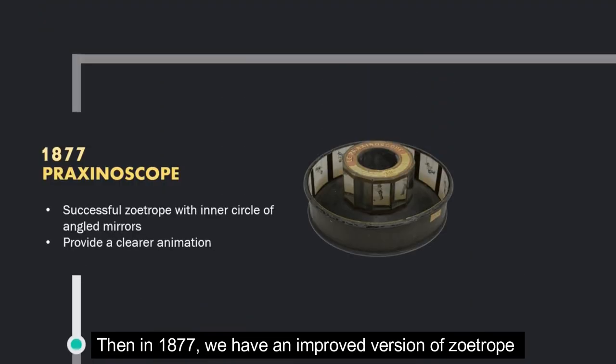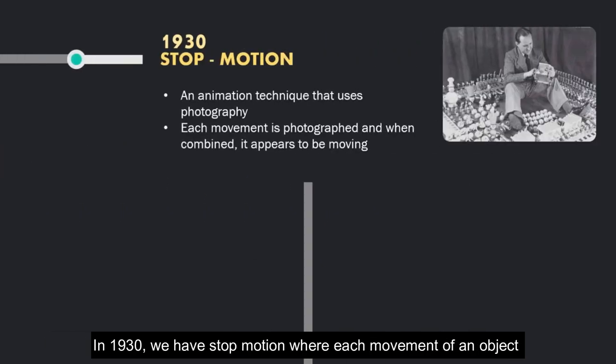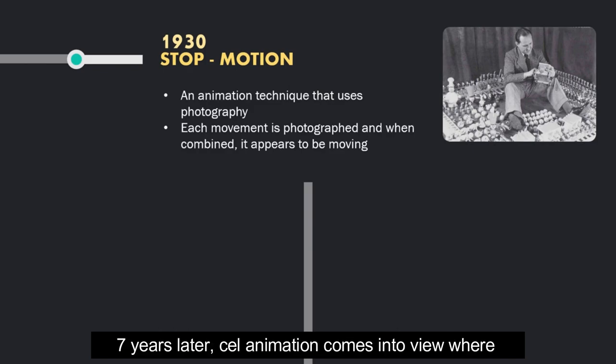Then, in 1877, we have an improved version of the zoetrope called the praxinoscope, which has an inner circle of angled mirrors. In 1930, we have stop motion, where each movement of an object is photographed and when combined, the object appears to be moving.